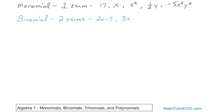What about 3x squared plus x? You have two terms — this one and this one — and they're glued together by either a plus or a minus. That's a binomial. Negative 7ab minus b squared: this is one term, the multiplication just makes it one term, and this is another term. They're glued together with this minus sign. So binomials have two terms.